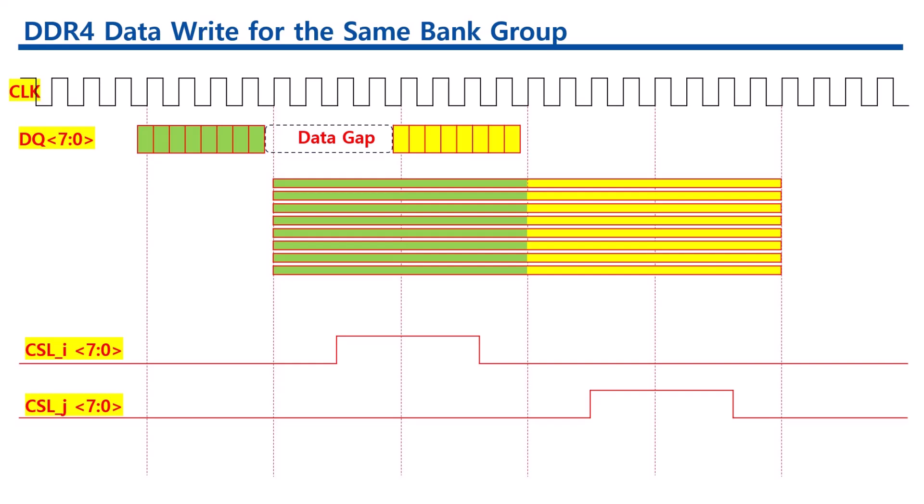However, when staying within the same bank group, more than 4 clocks are required. This causes a data gap on the IO pins.